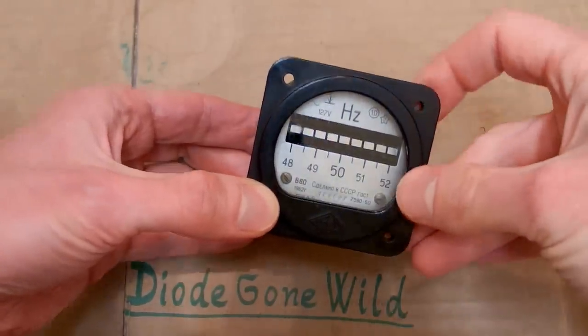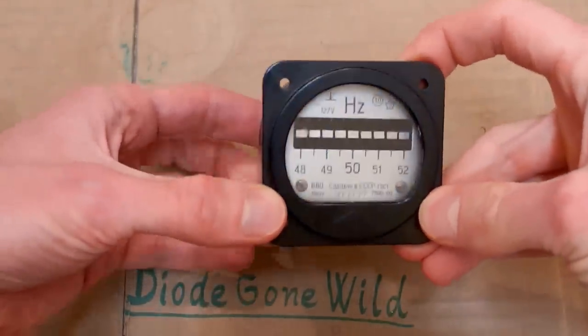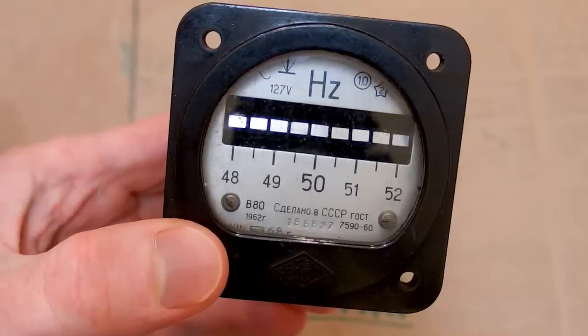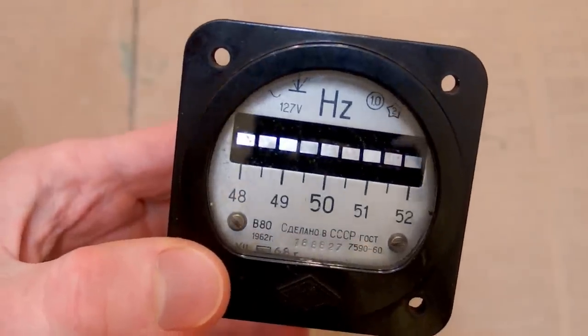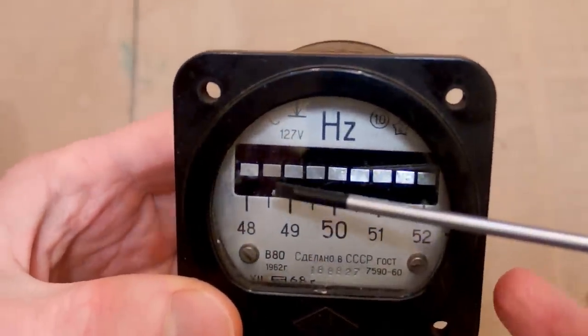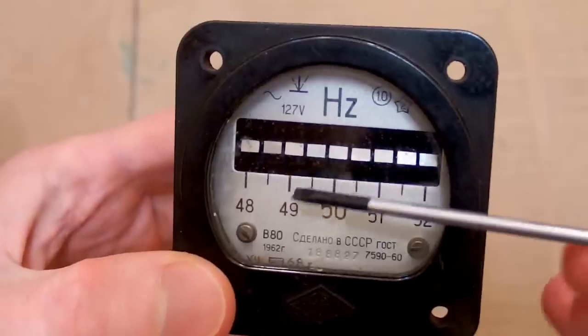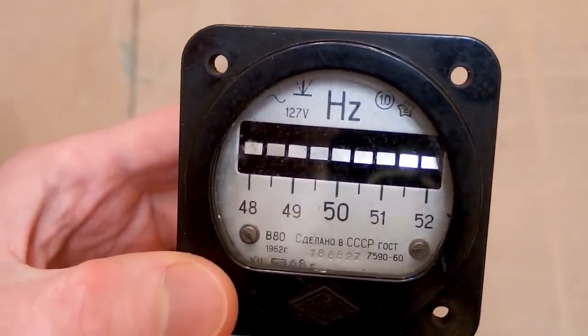Today let's take a look at this amazing frequency meter as I promised in the last video. It's a vibrating reed frequency meter. It has some metal strips in it with some resonance frequency and those are resonating and showing the frequency.